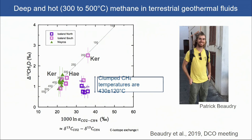Patrick has a poster today — if you're interested in the details, please stop by his poster. What he measured was the abundance of the clumped isotopolog, from which we infer a temperature of 430 degrees centigrade, plus or minus 130.